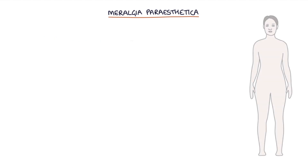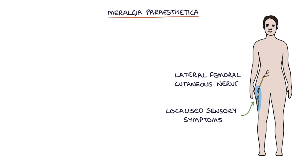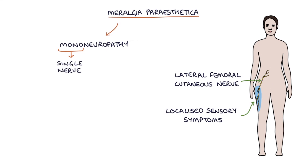Meralgia Paraesthetica refers to localised sensory symptoms of the outer thigh, which is caused by compression of the lateral femoral cutaneous nerve. This is a mononeuropathy, meaning that only a single nerve is affected.